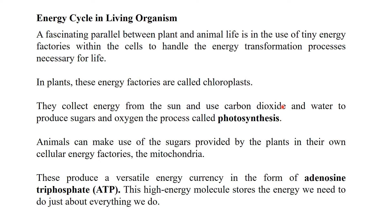Using sunlight, carbon dioxide, and water, along with the chlorophyll present in the chloroplasts, plants produce sugars — that is glucose — and oxygen. This process is called photosynthesis. During photosynthesis, carbon dioxide, water, sunlight, and chlorophyll are used in the green parts of the plants, and the products are glucose and oxygen. Photosynthesis is the basic step of the energy cycle.